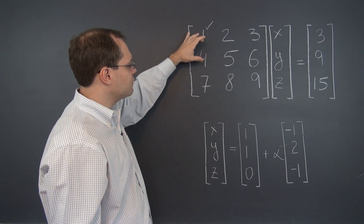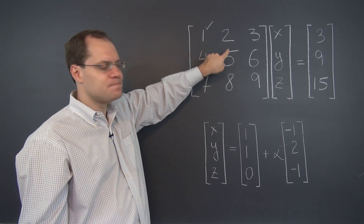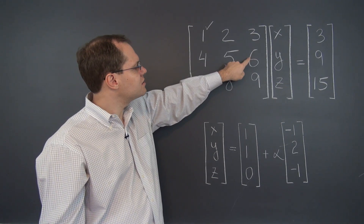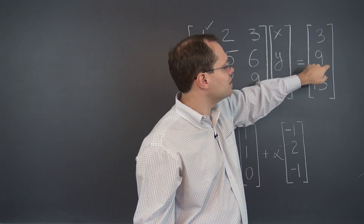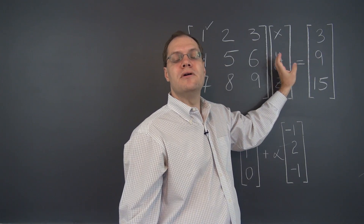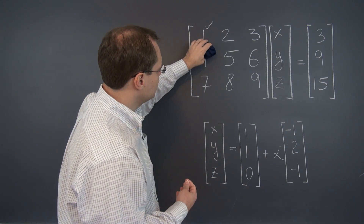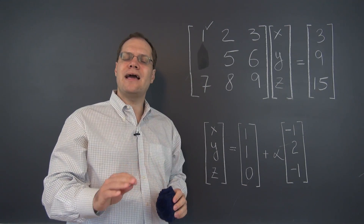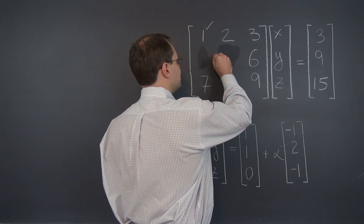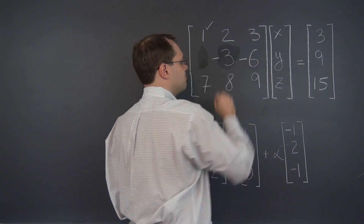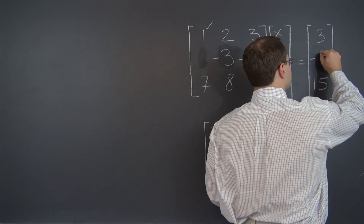So when we subtract four of the first row from the second, we'll have zero in this entry. Five minus eight gives minus three in this entry. Six minus twelve gives minus six in this entry. And nine minus twelve gives minus three in this entry. Always remember to do on the right-hand side what you're doing to the matrix. So four becomes zero — blanks mean zero. Minus five becomes minus three. Six becomes minus six. And nine becomes minus three.